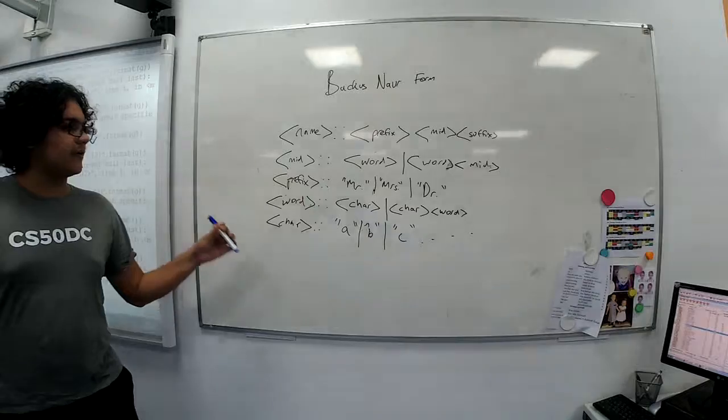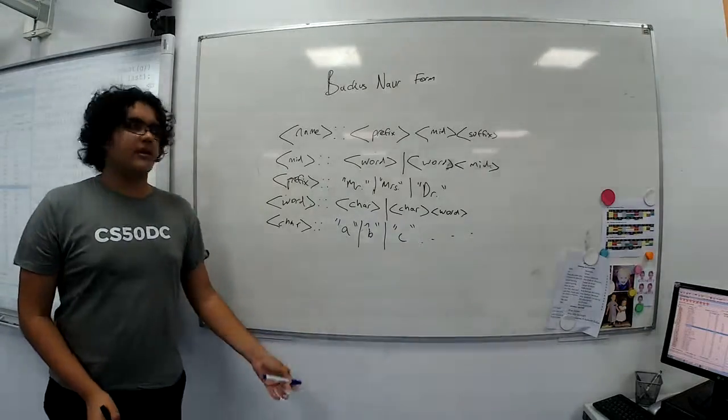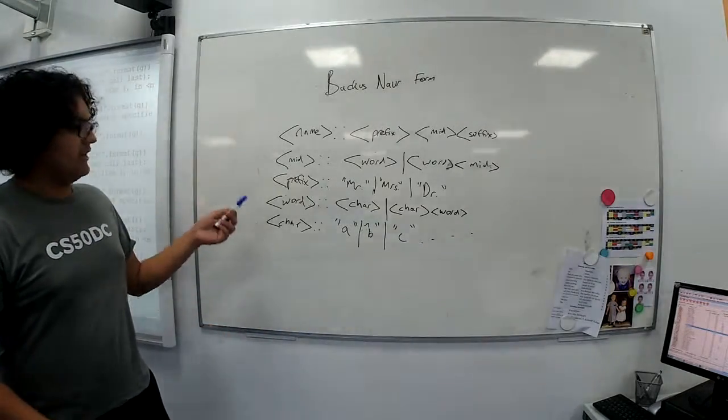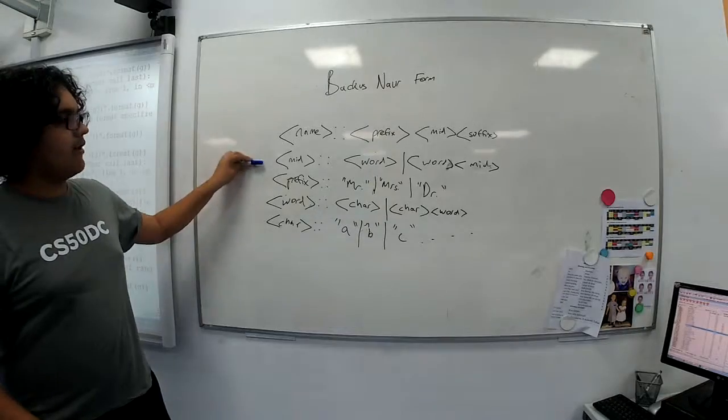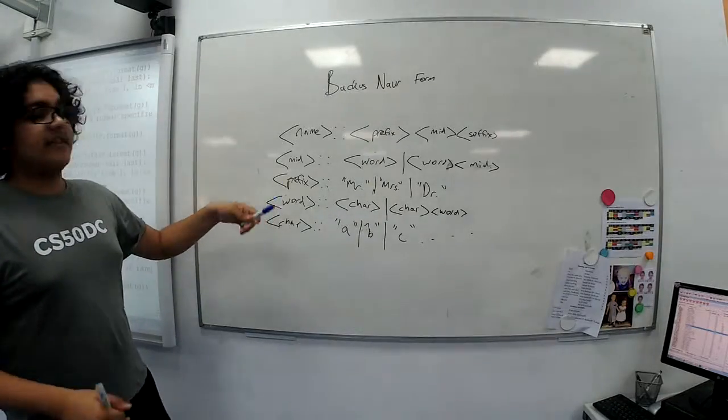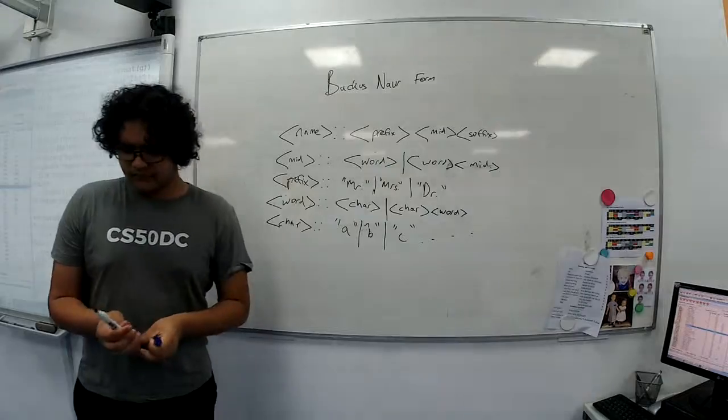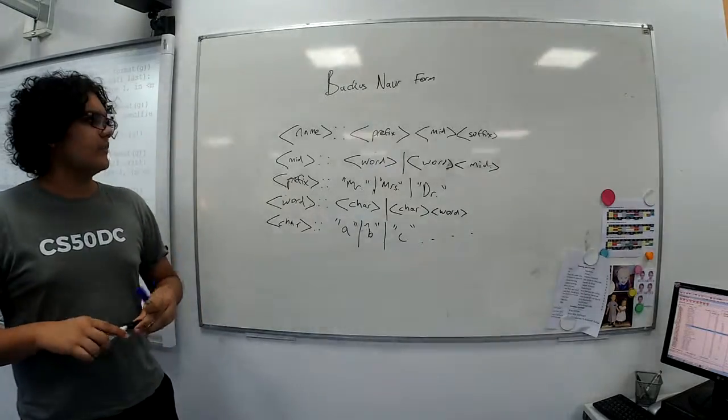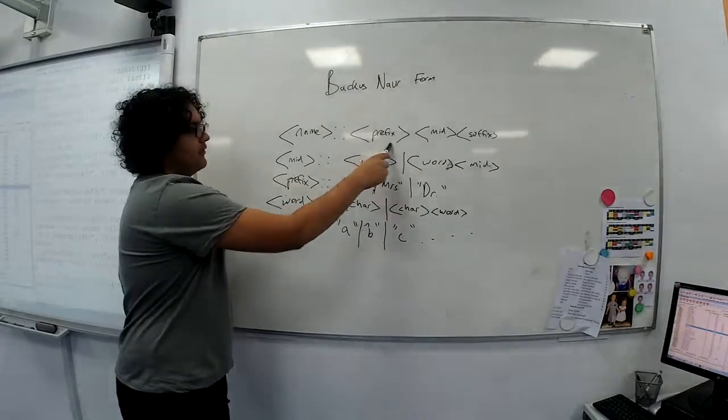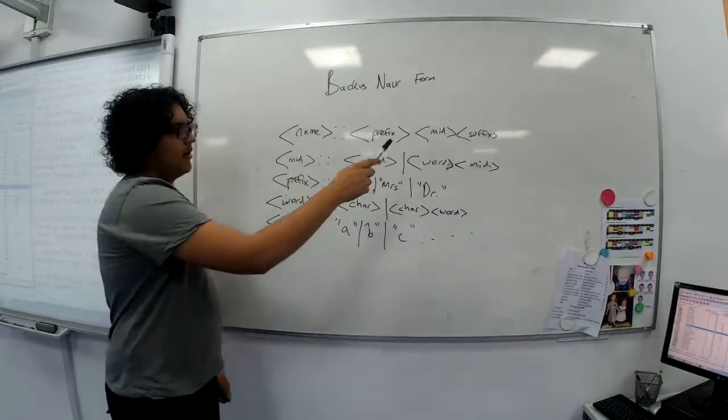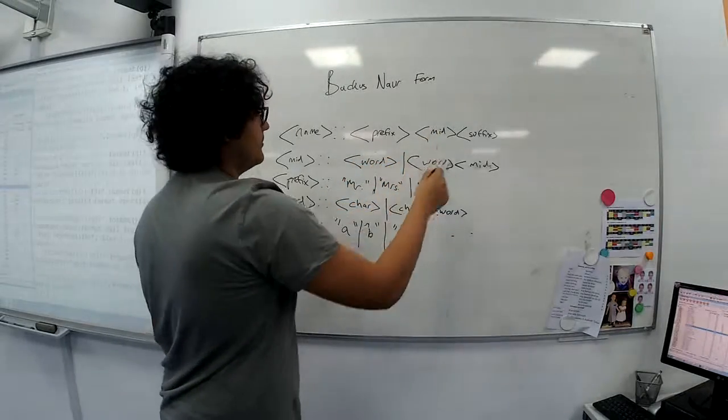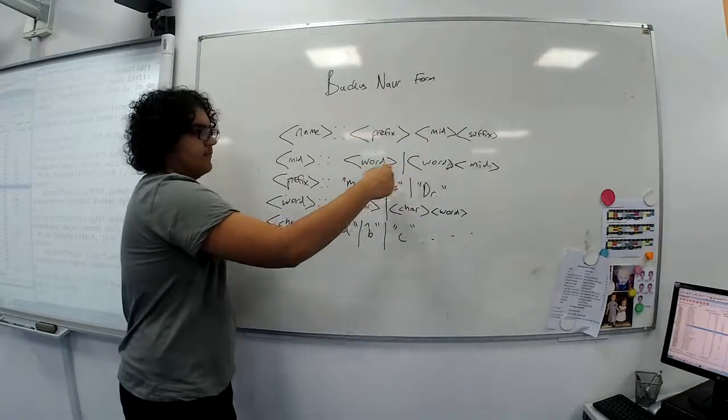And now we have a proper rigorous definition of what a name can be, using Backus-Naur form. And it's actually quite easy to understand, if you go down and figure out. And it's even easier to test whether a specific name matches this format. You can just see if the first bit is a prefix. Or if the middle part for some reason doesn't have any words, that would fail.